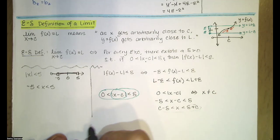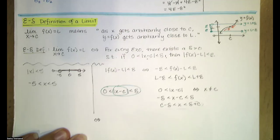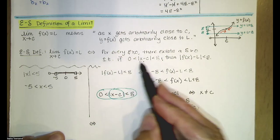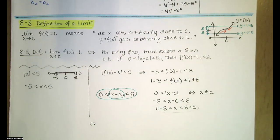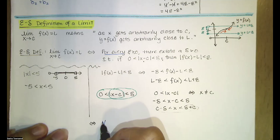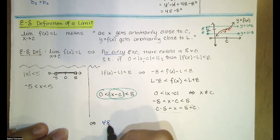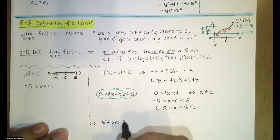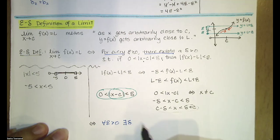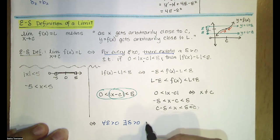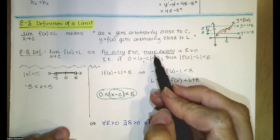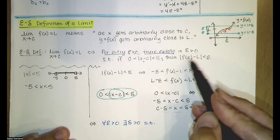This original statement can be rewritten symbolically. 'For every' is represented by an upside-down A, so we have: for every epsilon greater than zero, there exists — represented by a backwards E — a delta greater than zero, such that (abbreviated 'st') this inequality implies this inequality. That means x is in the interval and x is not equal to c.